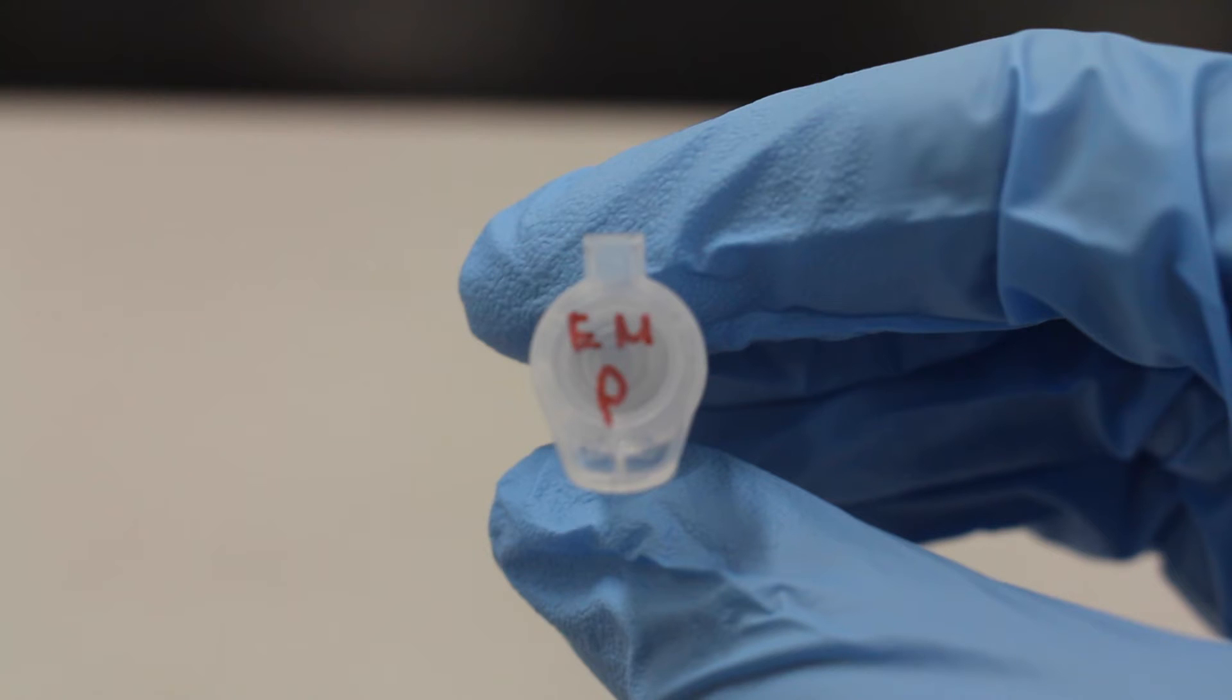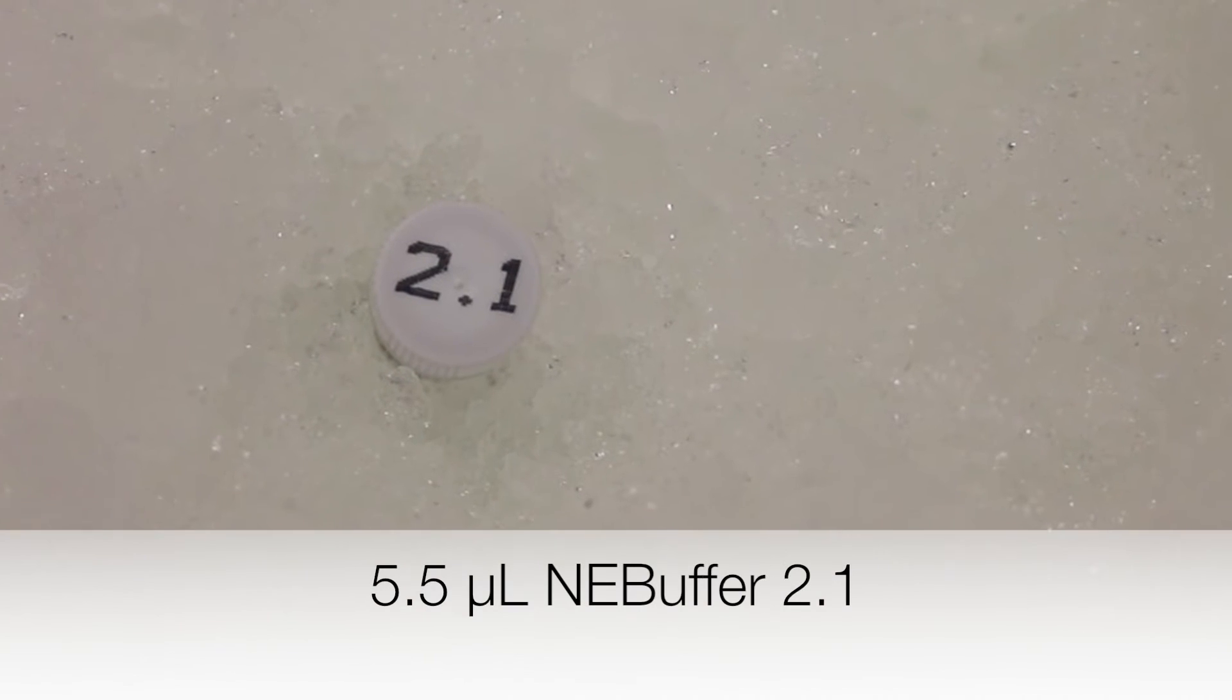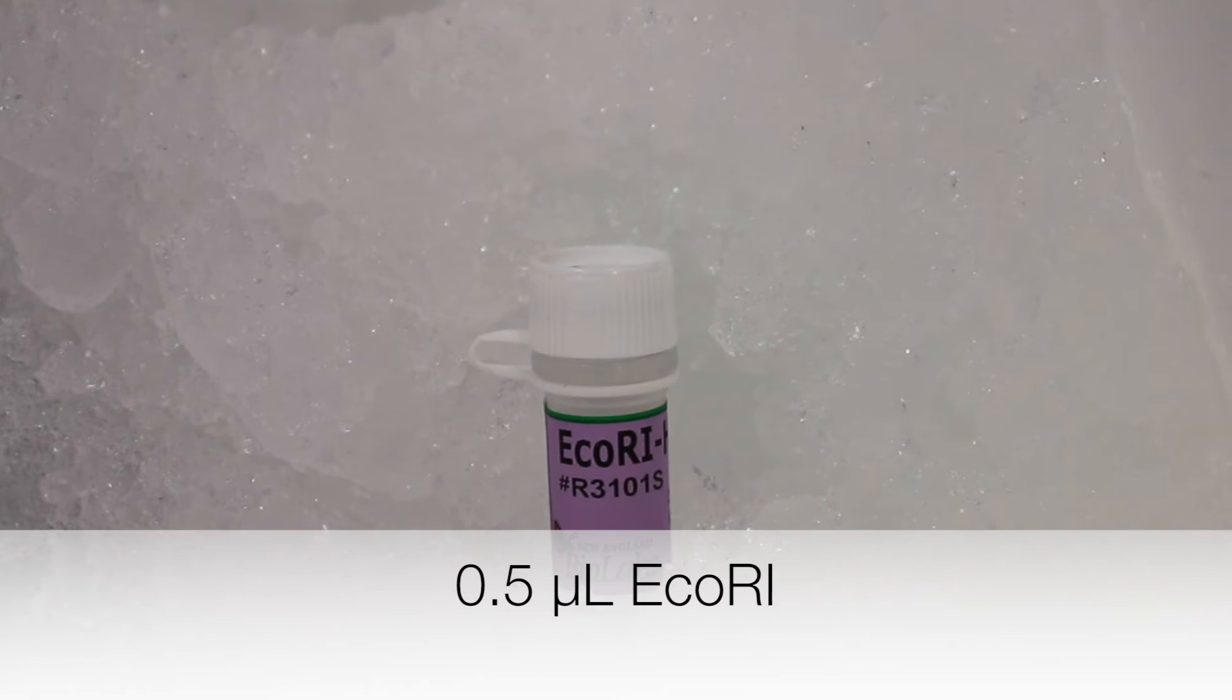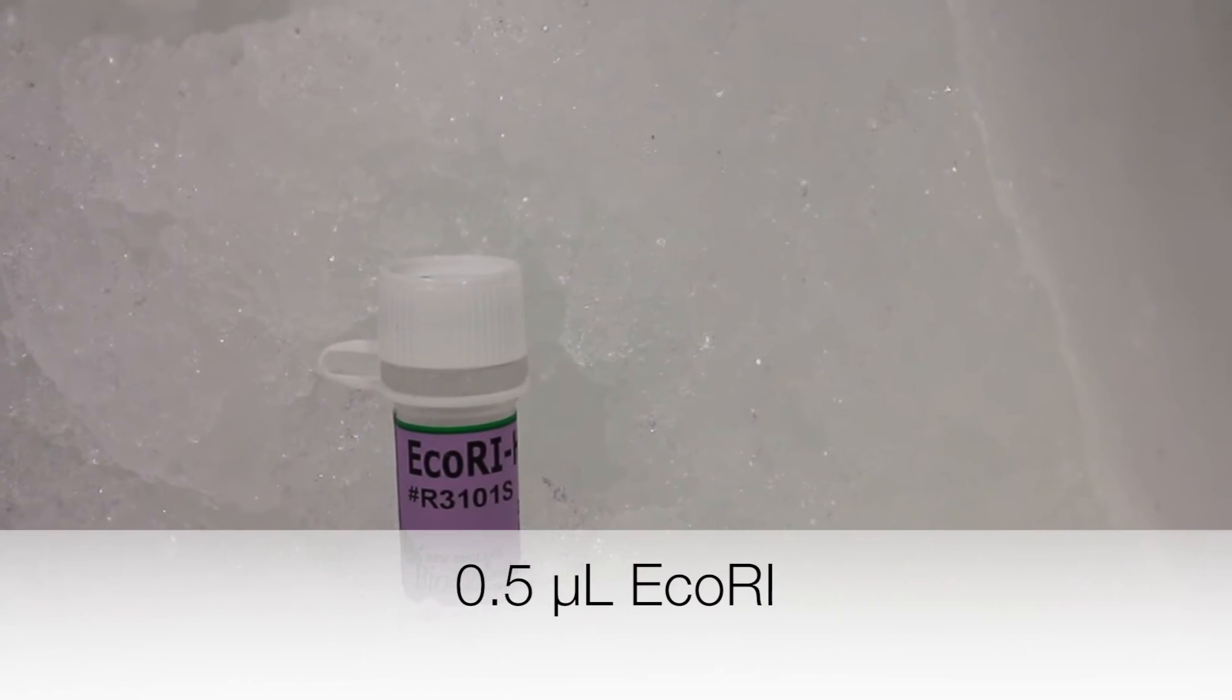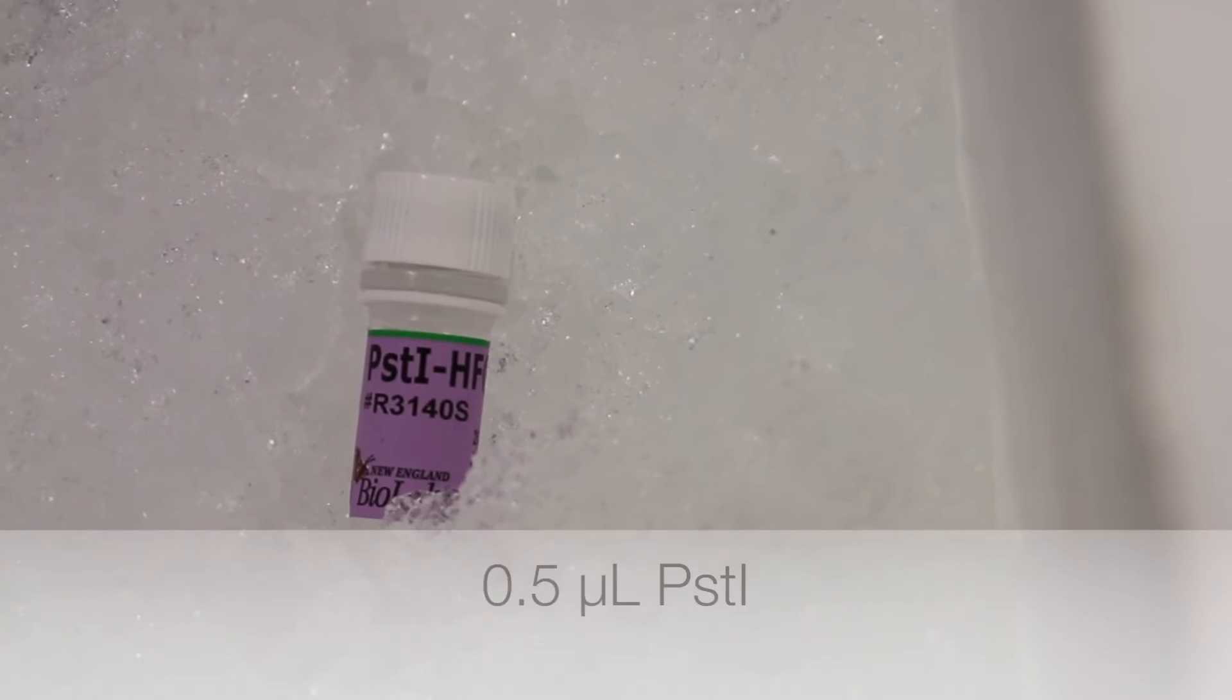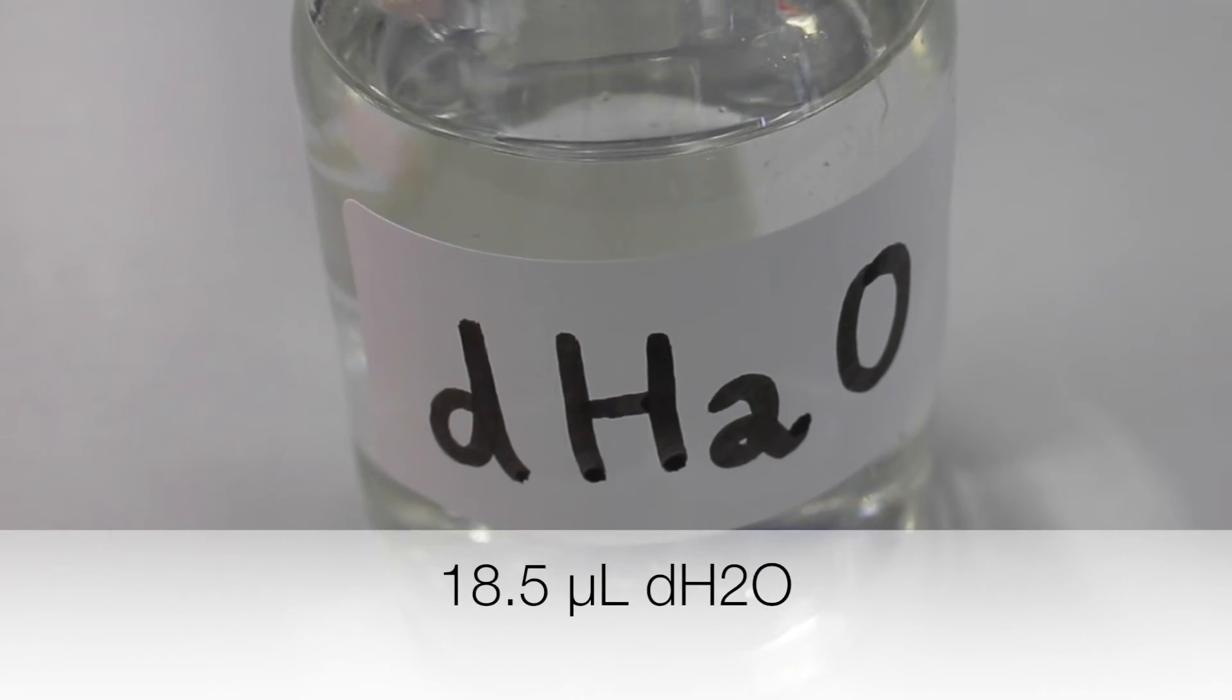The enzyme master mix for the plasmid backbone will contain the following: 5.5 microliters of NEB buffer 2.1, 0.5 microliters of EcoR1, 0.5 microliters of PstI, and 18.5 microliters of distilled water.